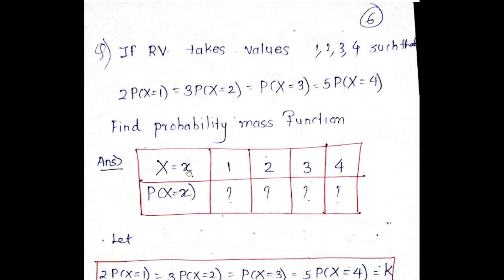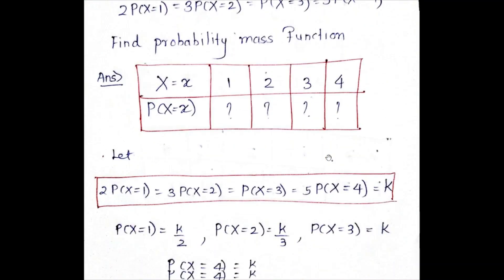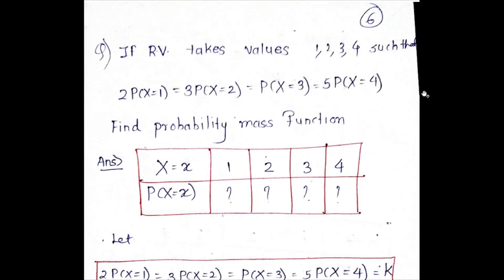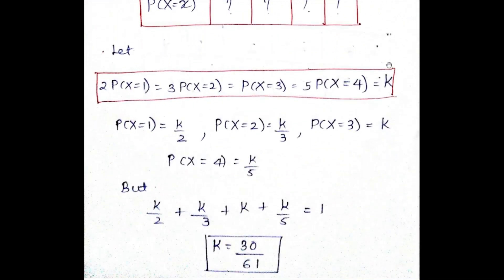Now, the given equation over here, you have to equate to k. That is going to be P(X=1) = k/2, P(X=2) = k/3, P(X=3) = k, and P(X=4) = k/5.